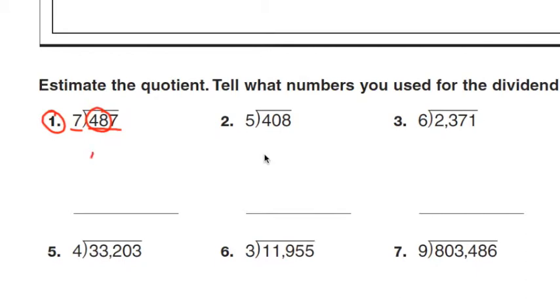I know that 49 is a multiple of 7 that's close to 48. So I'm going to rewrite the 49, and then since this is estimating, I'll just put a 0 in the 1's place to take the place of the 7.